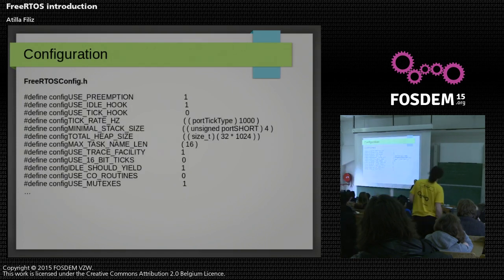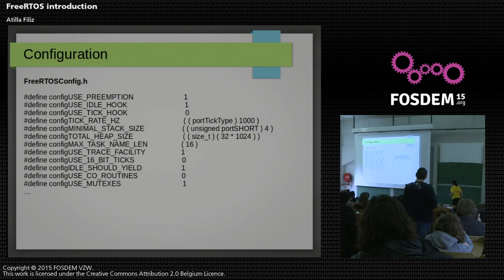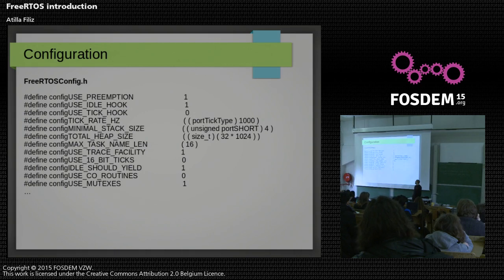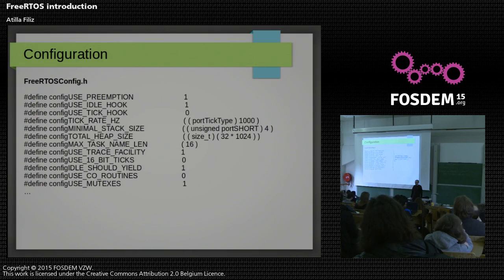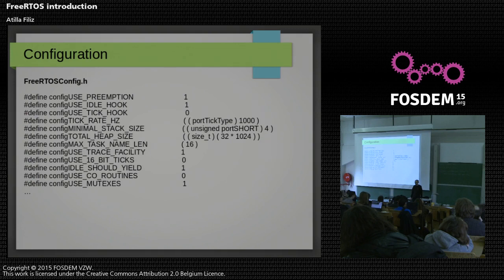Here is how we configure FreeRTOS. Basically, there is a file called FreeRTOSConfig.h, and you keep defining symbols. You enable preemption or not. You can enable or disable several hooks if you need them. There are also some numerical parameters, like how long a task's name can be, whether I want to use tracing, whether I want to use mutexes, and so on.